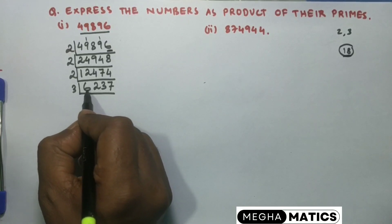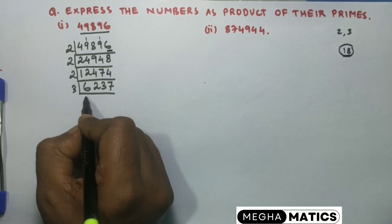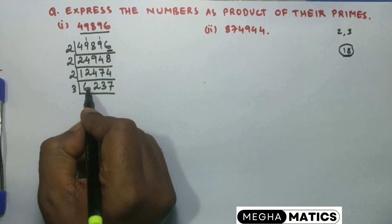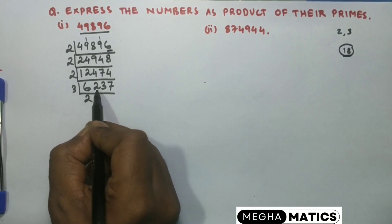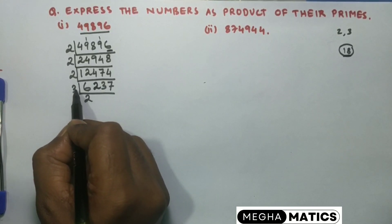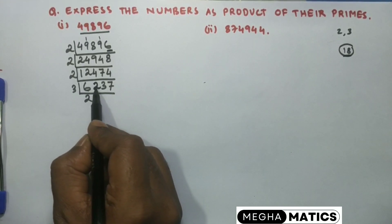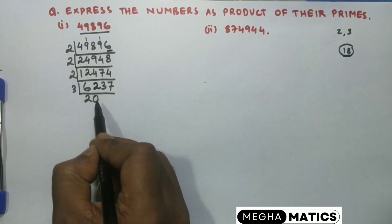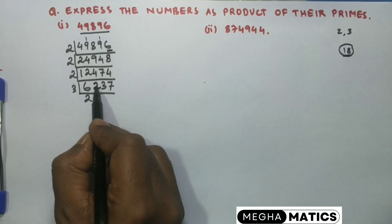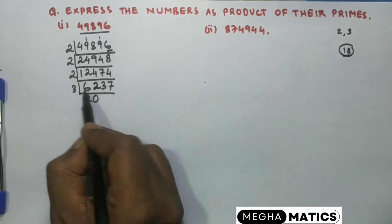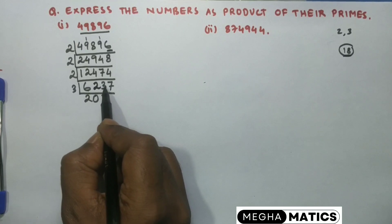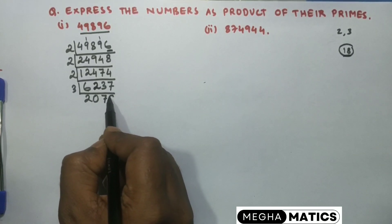So we divide by 3: the first digit is 6, dividing 6 by 3 gives 2 times. After dividing 3 into 6, no number is left. Then 2 comes, which is smaller than 3, so 3 doesn't divide 2 — we put a 0 here. Then 2 and 3 becomes 23; 3 sevens are 21, so 23 minus 21 is 2, then 27, and dividing 27 by 3 gives 9 times.